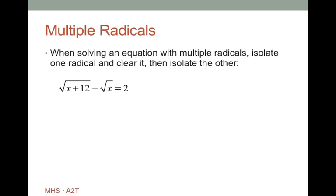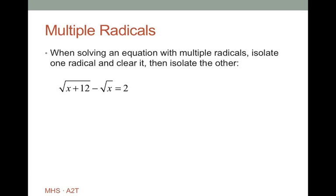Multiple radicals — this is where it gets tricky. If you have two different equations with variables under the radical, you want to isolate one radical and clear it, and then isolate the other one. It takes a couple of steps. You can't just square the left side and expect the radicals to go away — if you foiled it out, you'd still have radical terms left. So we isolate one radical, clear it, then isolate the other.